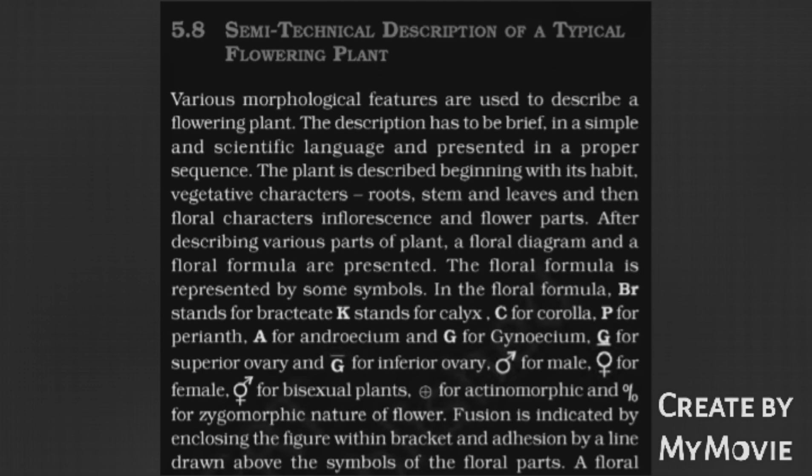Circle with arrow stands for Male, circle with plus mark for Female, circle with both arrow and plus for Bisexual plants, plus in the circle for Actinomorphic, and percentage symbol for Zygomorphic nature of flower. Fusion is indicated by enclosing the figure within brackets, and addition by a line drawn above the symbol of the floral part.